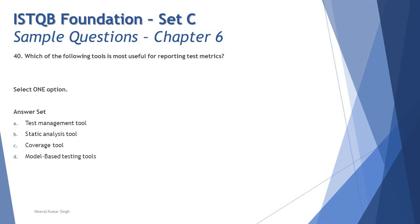Option B, the static analysis tool, only conducts code reviews using a tool and does not give any kind of test metrics. Option C, the coverage measurement tool, talks about statement coverage, condition coverage, and decision coverage — measuring unit testing outcomes — but does not give test metrics as such. Option D, model-based testing tools, are used for creating UML diagrams to convert requirements into business models, but certainly don't provide test metrics either.